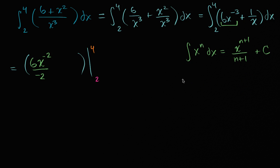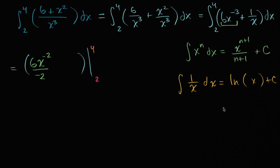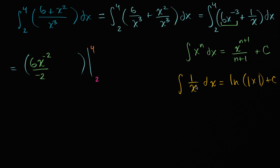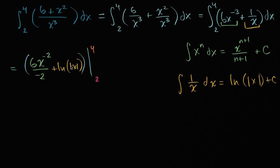Luckily there is another property. The antiderivative of one over x, or x to the negative one, is the natural log of x plus C. I actually prefer writing it as the natural log of the absolute value of x, because that's defined for negative values of x as well, not just positive values. The derivative of ln|x| is indeed one over x. Though our bounds are both positive here, it's not a bad habit to include the absolute value.